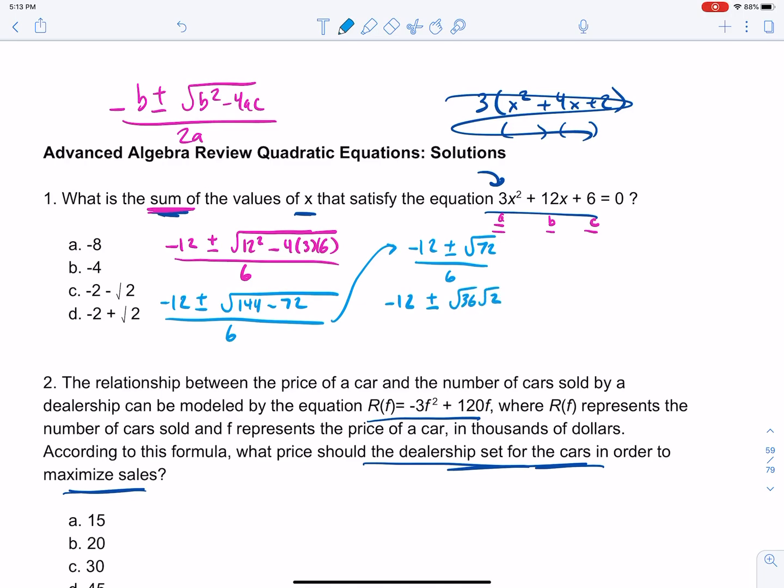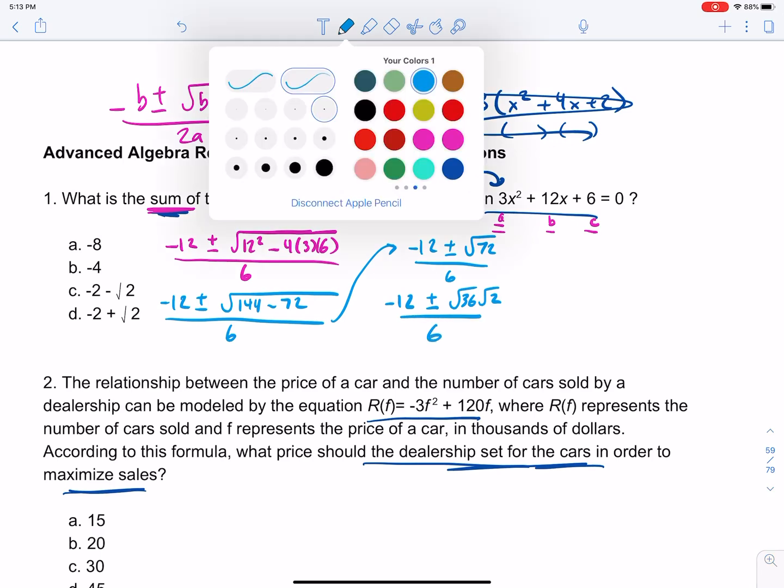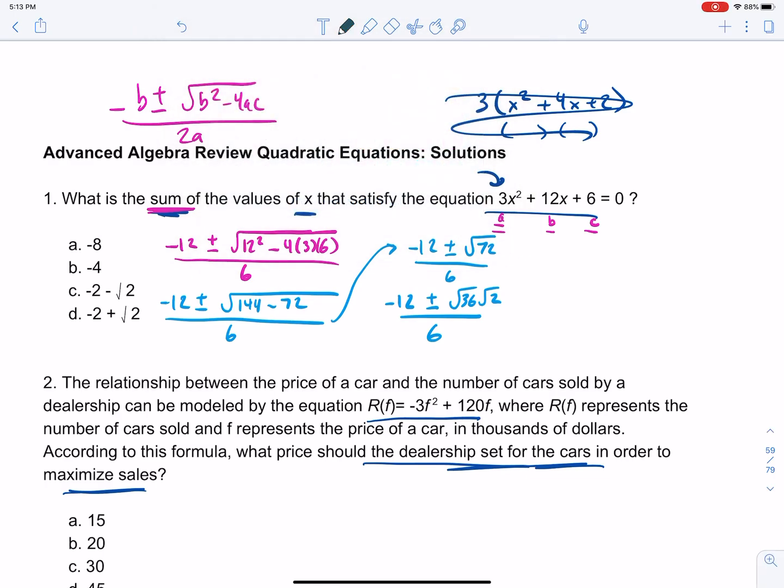Okay, so now let's use another color. And so now what we have is negative 12 plus or minus, and here's where it gets a little messy. 12 squared is 144. 4 times 3 times 6 is 72, and then this is all over 6. So now here's what's going to happen. We have negative 12 plus or minus, 144 minus 72 is 72. Square root of 72 all over 6. We're almost done, but it's still a little messy. Negative 12 plus or minus, the square root of 72 does not break down simply, right? But you can write it as the square root of 36 times the square root of 2. And if you're feeling a little bit like, man, this is long, that's part of the way the new SAT is.